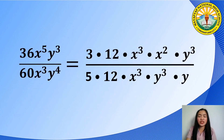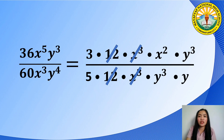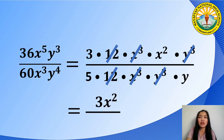The second step is to cancel out the expressions that are the same in both the numerator and denominator, because if the numerator and denominator of a fraction are the same, it is equal to 1. So 12 divided by 12 is 1, x to the third power divided by x to the third power is 1, and y to the third power divided by y to the third power is also 1. Step 3: rewrite any remaining expressions. The remaining expressions in the numerator are 3 and x squared, and in the denominator are 5 and y. So the simplest form of 36x⁵y³ over 60x³y⁴ is 3x squared over 5y.